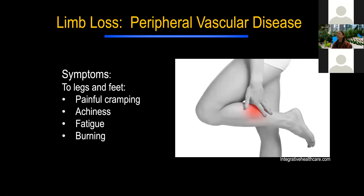Peripheral vascular disease can present as painful cramping, achiness, fatigue of the limb with ambulation, and burning pain. You also hear about claudication — when you start to walk, the more you walk the more painful it becomes, then you rest and it feels better. That's a term you'll be hearing going forward.